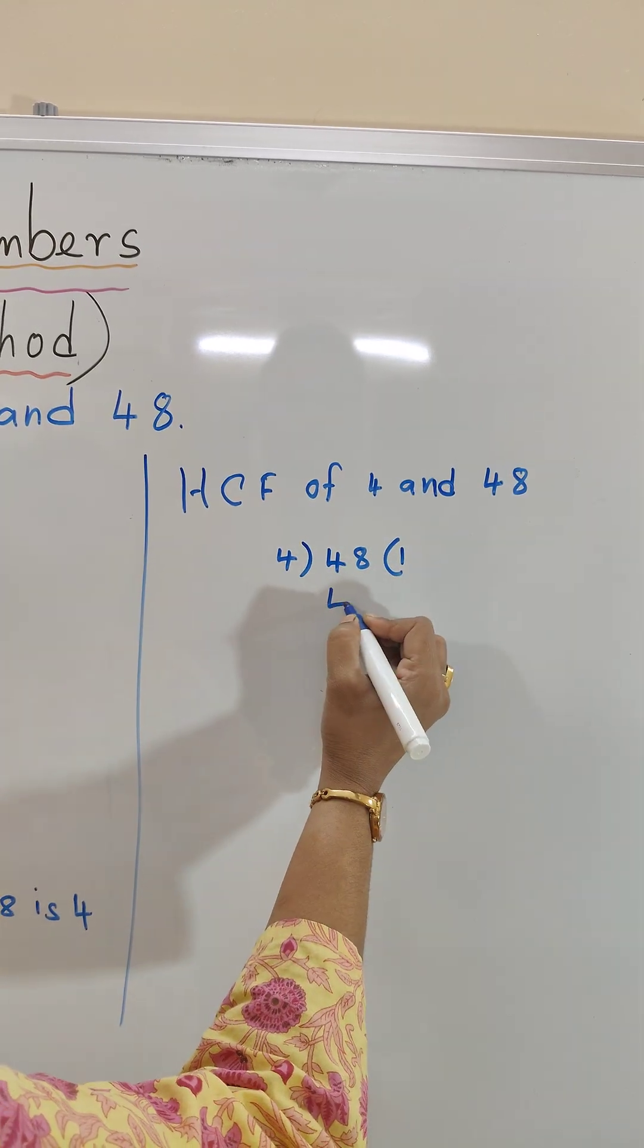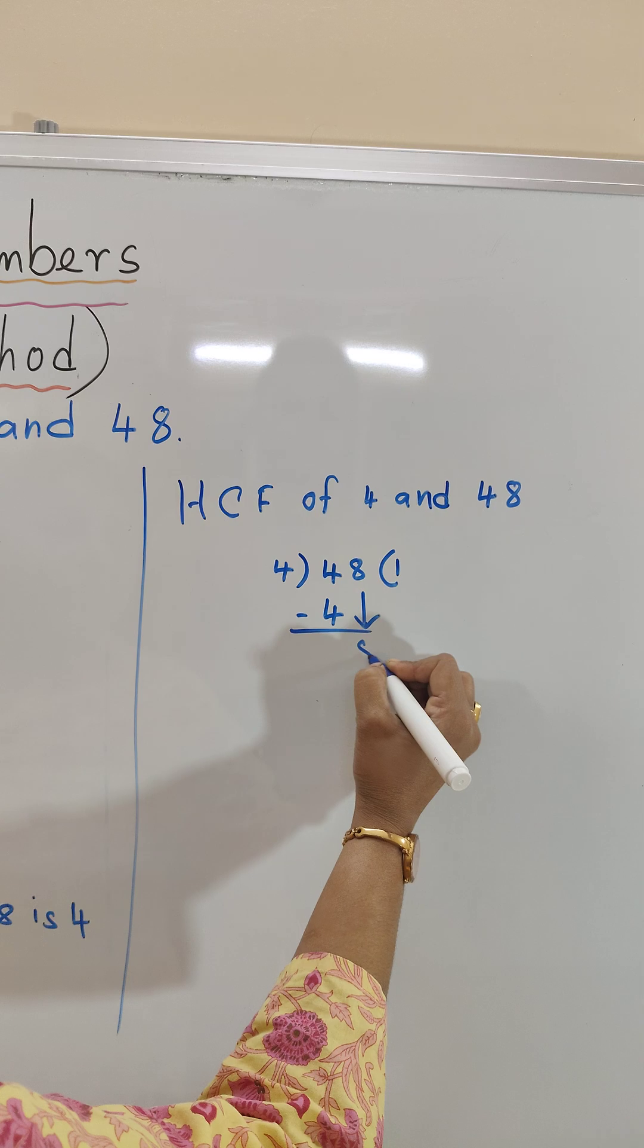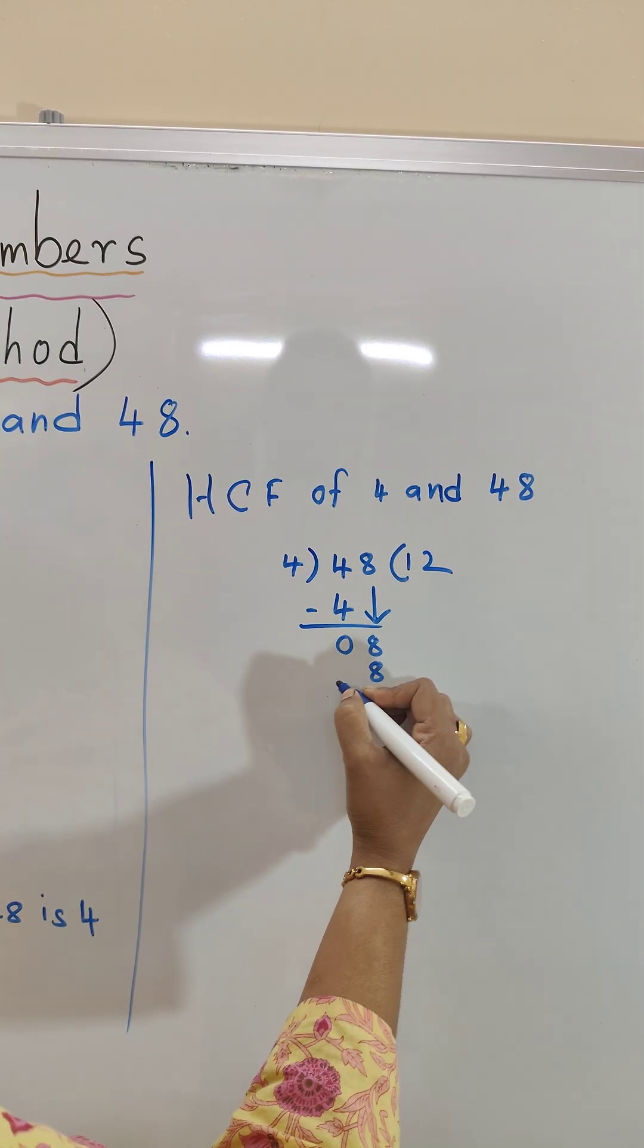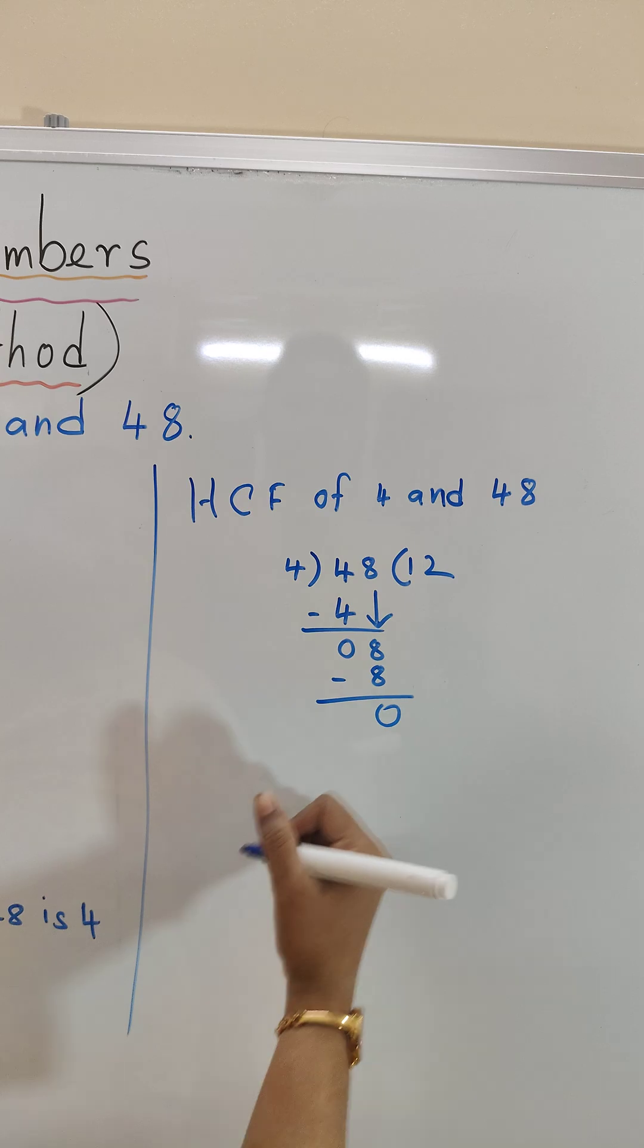4 times 1 is 4. 8 will come down. 4 to the 8. 0.